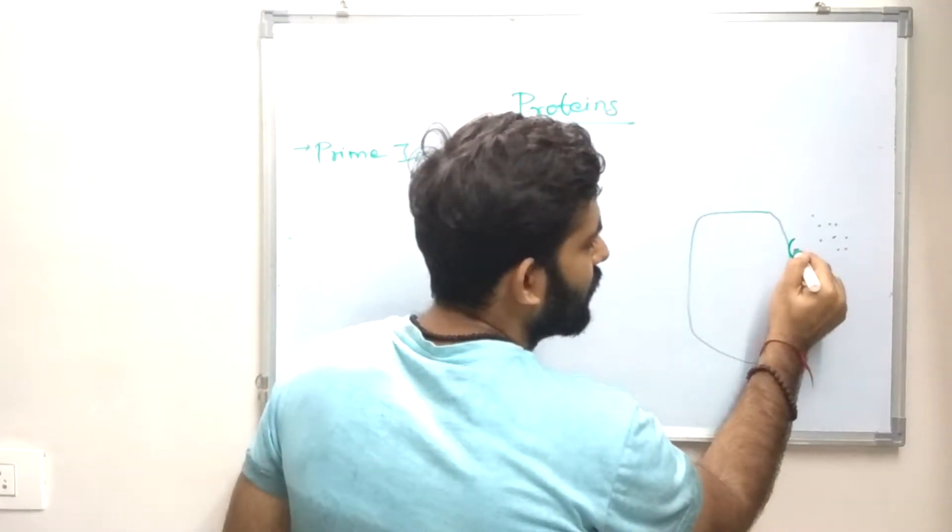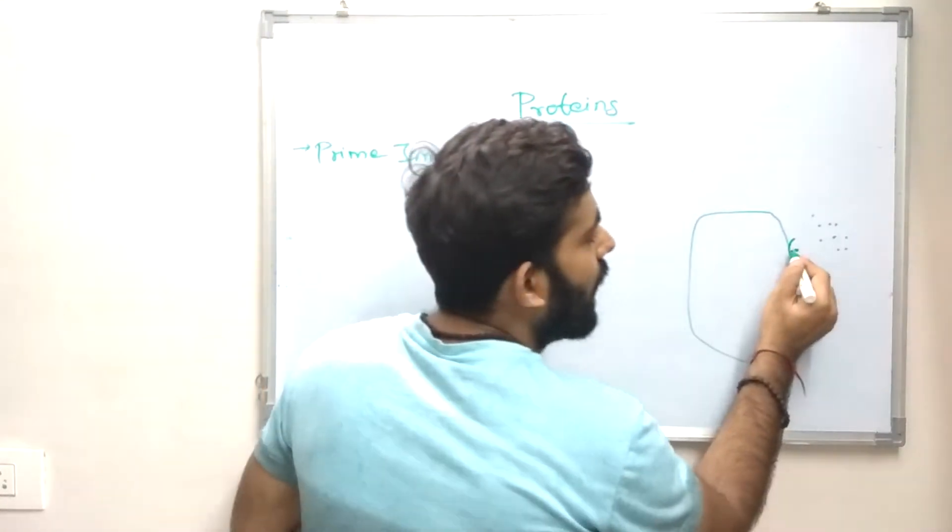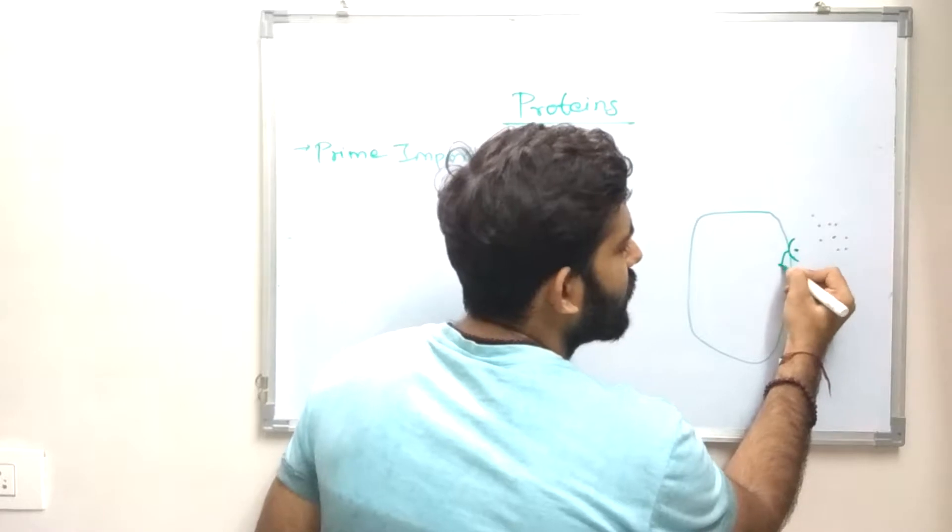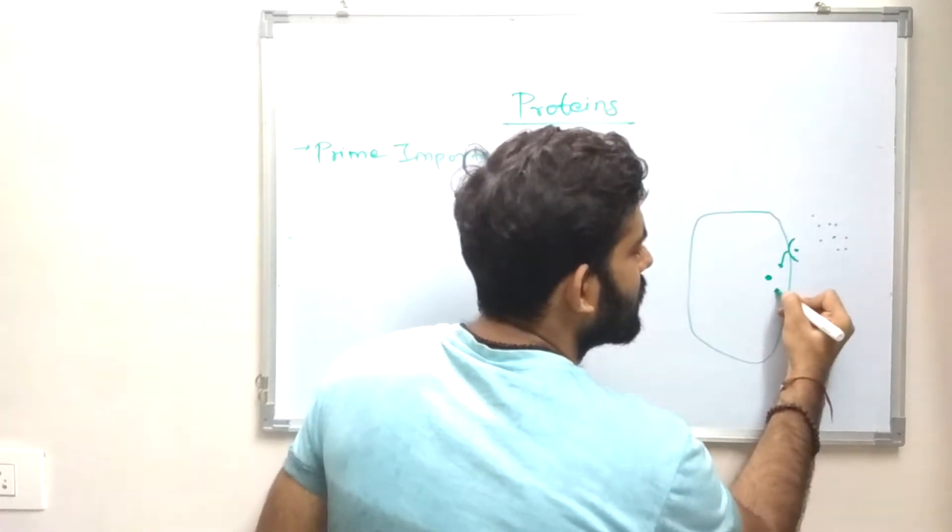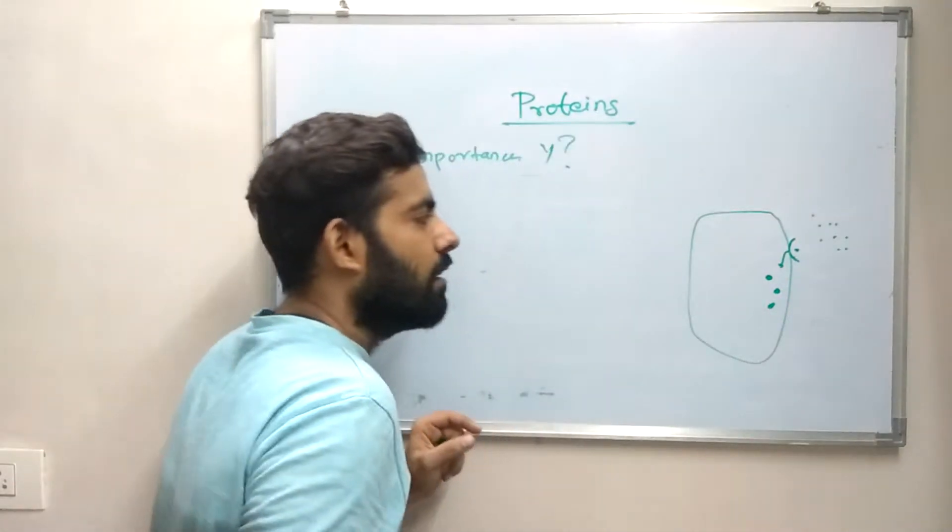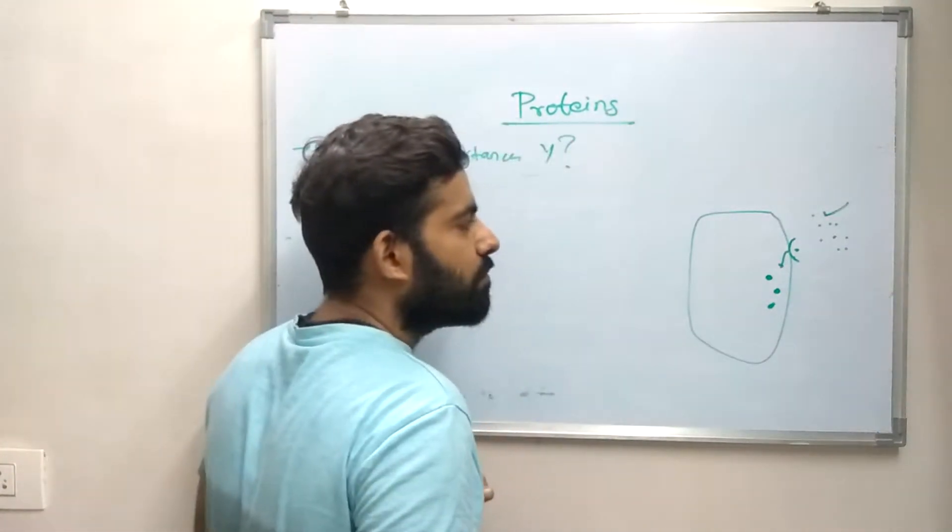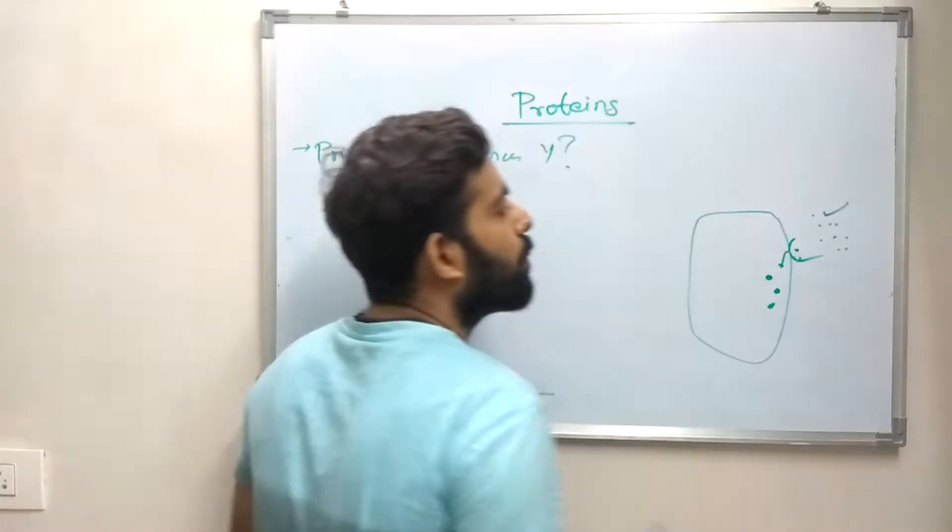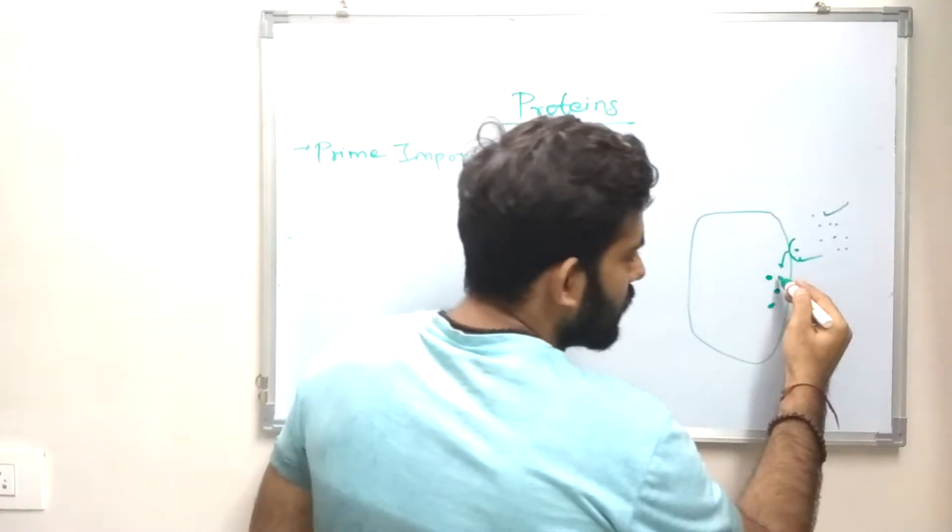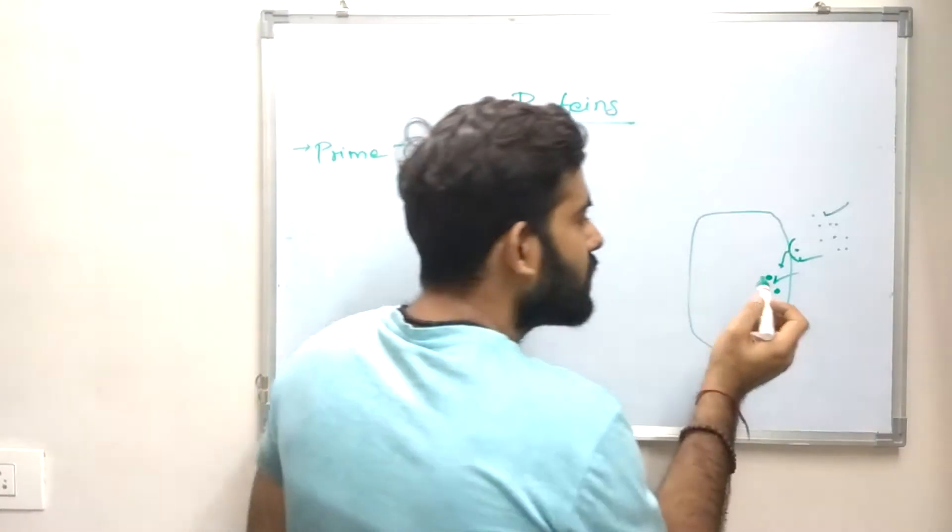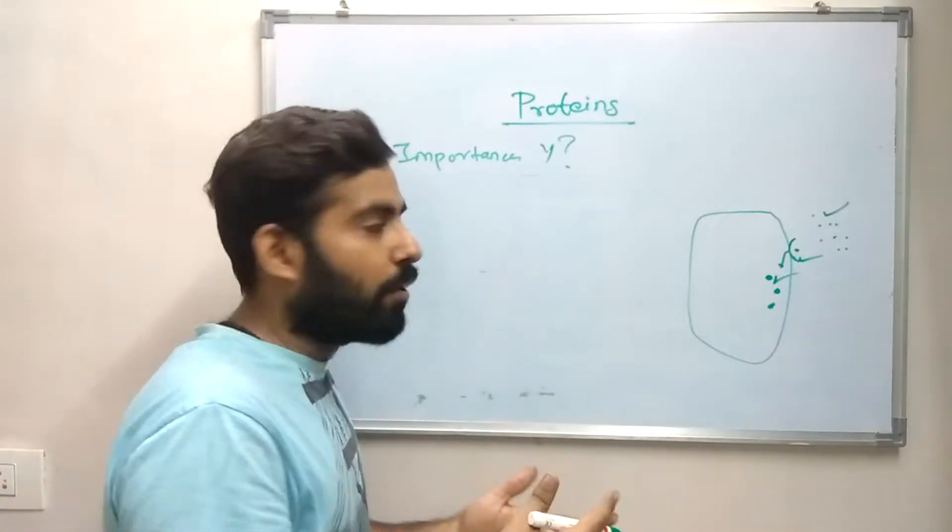Binding of the signaling molecules to the receptor will lead to the activation of secondary messengers inside the cell. Now we all know that the signaling molecules are mostly proteins, the receptors are proteins, the second messengers are proteins.